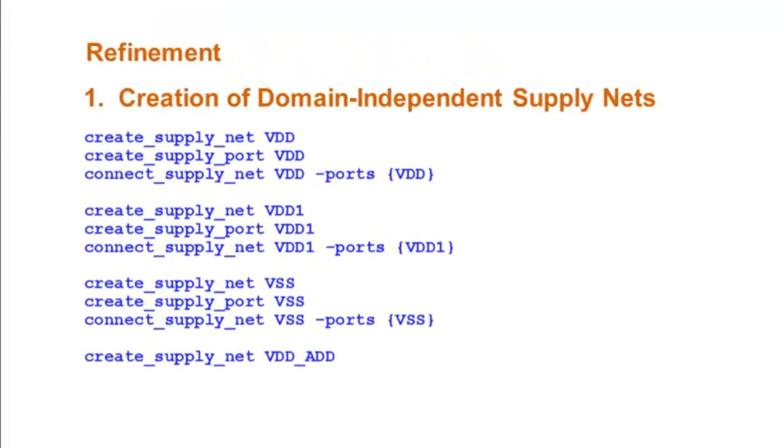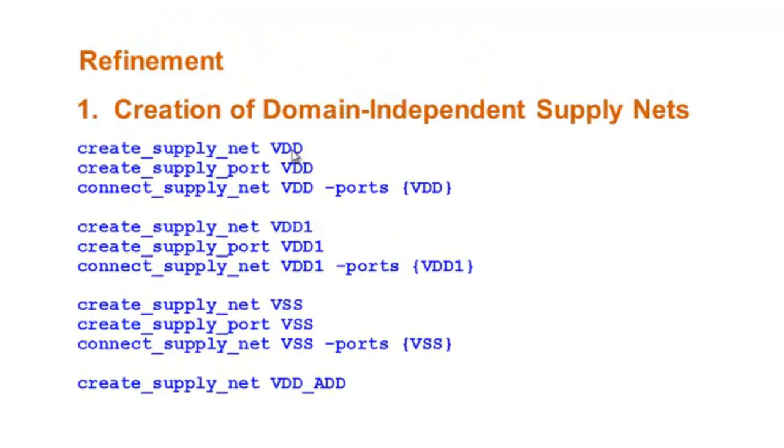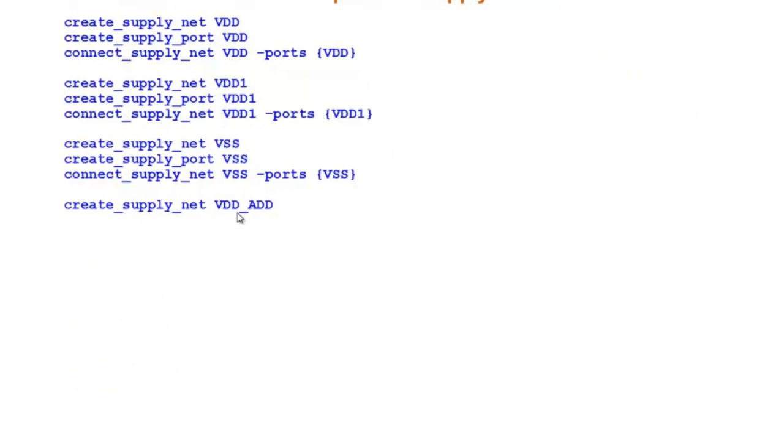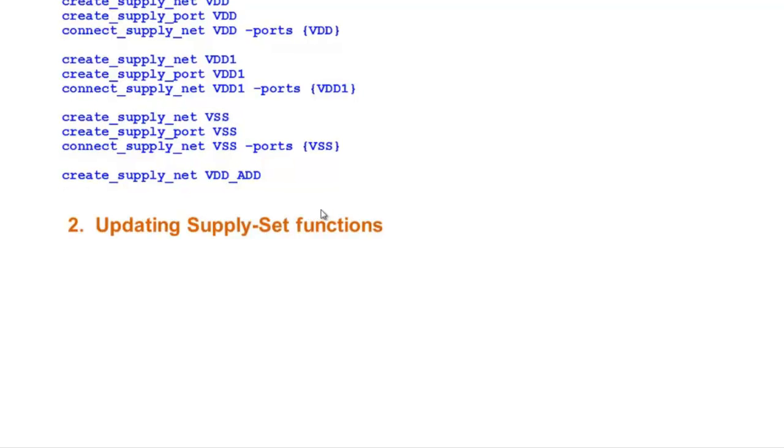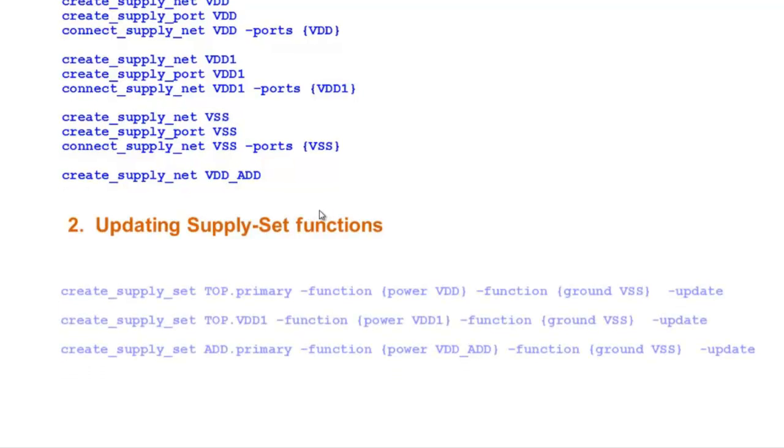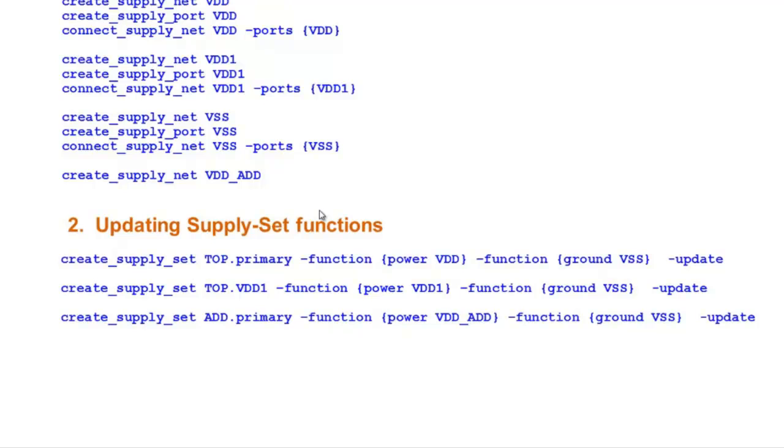The next topic is Refinement. It consists of two stages. First one is Creation of Domain Independent Supply Nets. We create SupplyNet VDD, supply port VDD and connect them. Create SupplyNet VDD1, port VDD1 and connect them. SupplyNet VSS, port VSS and connect them. We create SupplyNet VDD Add. This is an internal supply which is connected to the output of the power switch. The next step is to update the SupplySet functions.